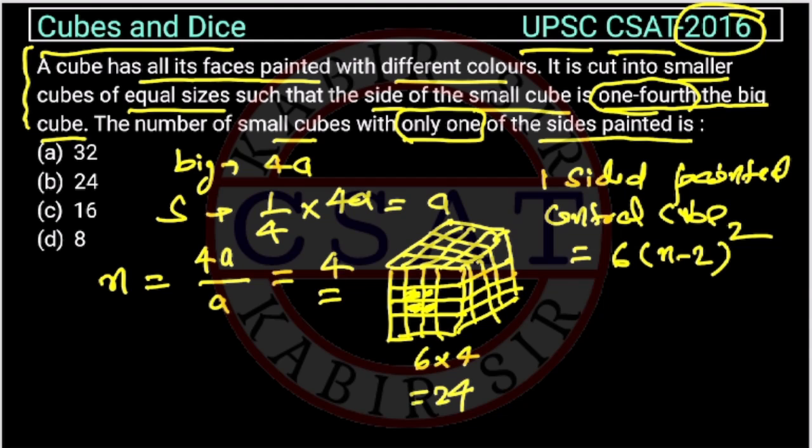Otherwise, through the formula you can do this. This is the formula: 6 into (n-2) squared. So this is 6 into (4-2) squared equals 6 into 2 squared equals 6 into 4 equals 24.